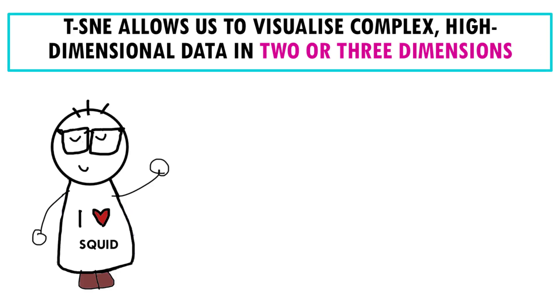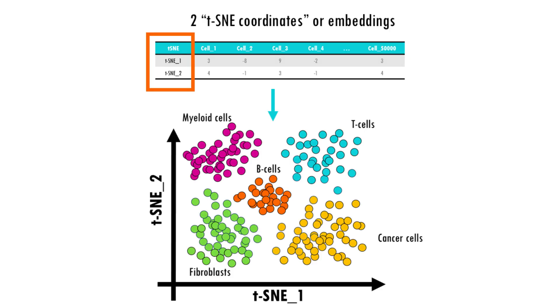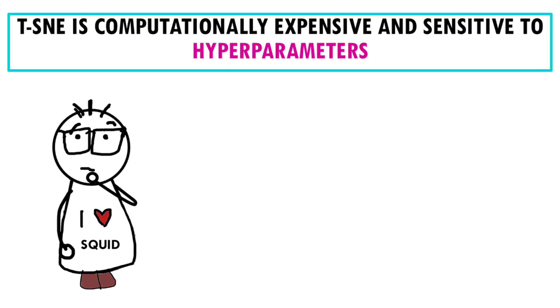In summary, t-SNE is excellent for visualizing complex high dimensional data in two or three dimensions. For example, if we want to see clusters of cells with similar gene expression profiles. But it is computationally expensive and sensitive to hyperparameters, meaning the plot you get at the end depends on the perplexity you set.